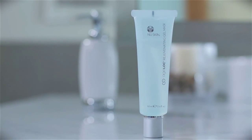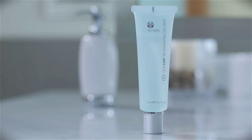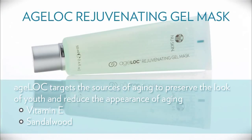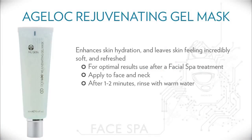Now let's look at another product in the ultimate anti-aging regimen: Agelok Rejuvenating Gel Mask. Agelok Rejuvenating Gel Mask targets the source of aging to preserve the look of youth and reduce the appearance of aging. Vitamin E, a very powerful antioxidant, and Sandalwood, a hydrating ingredient, are included. In addition, Agelok ingredients are found in the product. Agelok Rejuvenating Gel Mask enhances skin hydration and leaves skin feeling incredibly soft and refreshed. You can use this to optimize your anti-aging efforts. Very simple to use — apply to your face and neck after a facial spa treatment, and after one to two minutes, rinse with warm water.